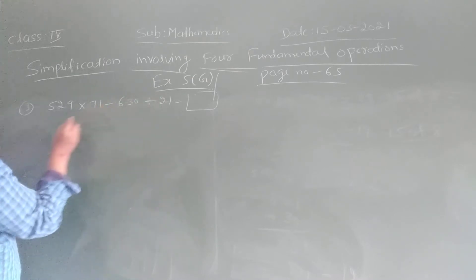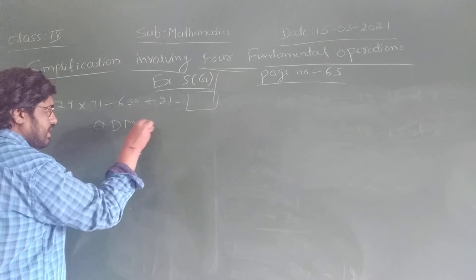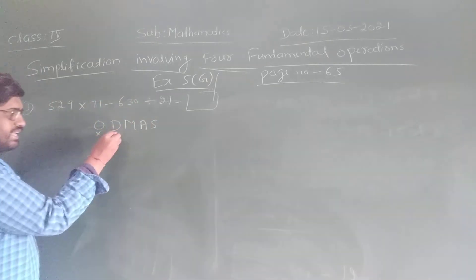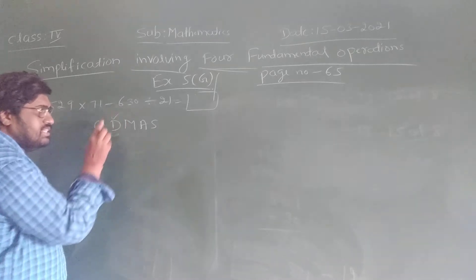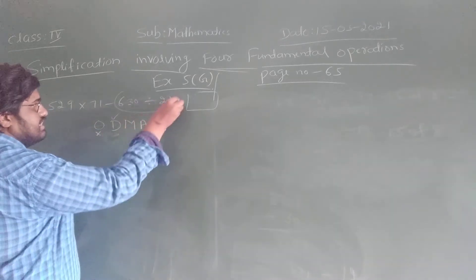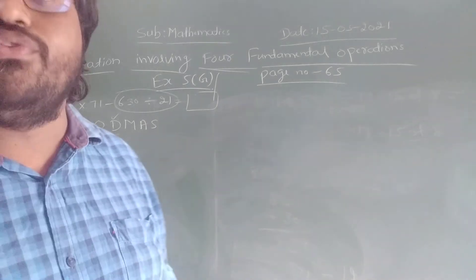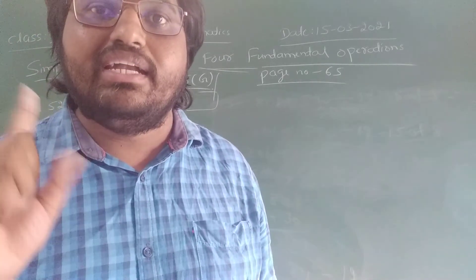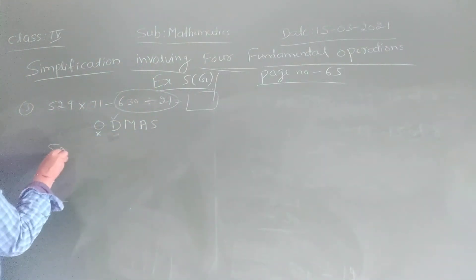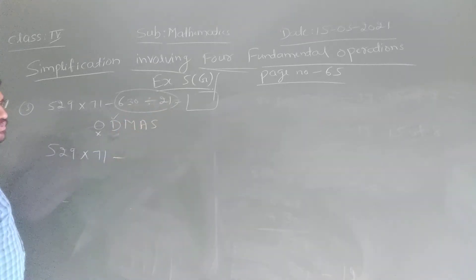So children, what is the rule? O, D, M, A, S. O is not there. D is there — D means division. So first we have to apply the division. 529 into 71, keep it as it is. Perform 630 divided by 21.